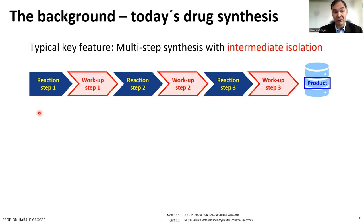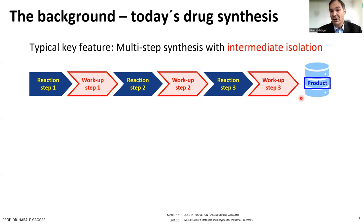If you look at these overall multi-step syntheses, it looks as shown here in this picture: you have reaction step one, followed by a workup step; then you use the intermediate in purified form as a substrate for the next step; again a workup step follows, and then you conduct another reaction. Finally you get your product in pure form. Obviously there are also advantages connected to that procedure, in particular because you have, in each step, a pure substrate which you can use.